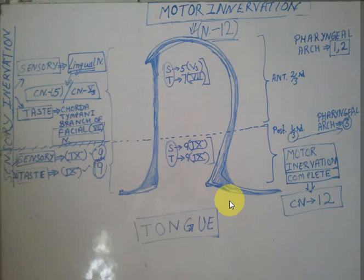Now for sensory innervation, the tongue is divided into the anterior two-thirds and the posterior one-third. Sensory innervation has two parts: somatic sensory innervation — that means senses like pain, temperature, and pressure — and taste innervation. Those are the two parts of sensory innervation.